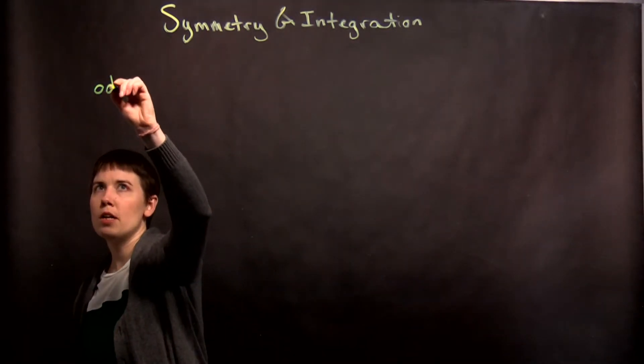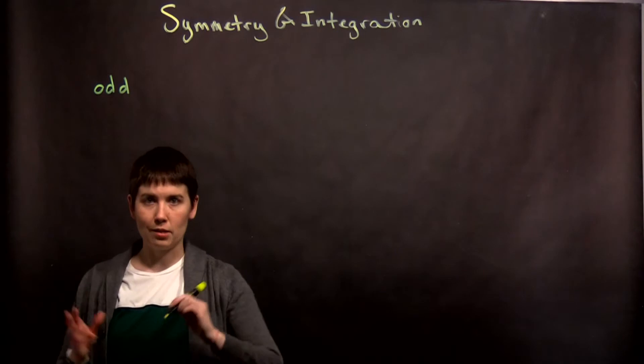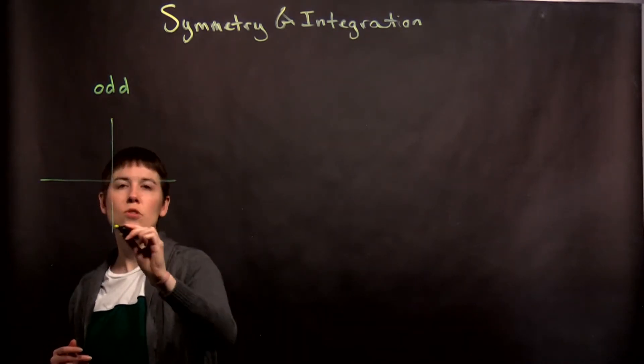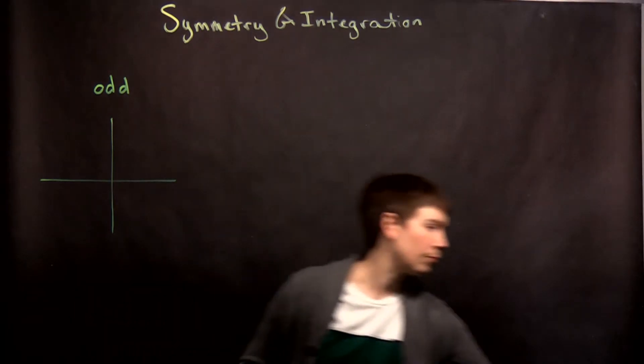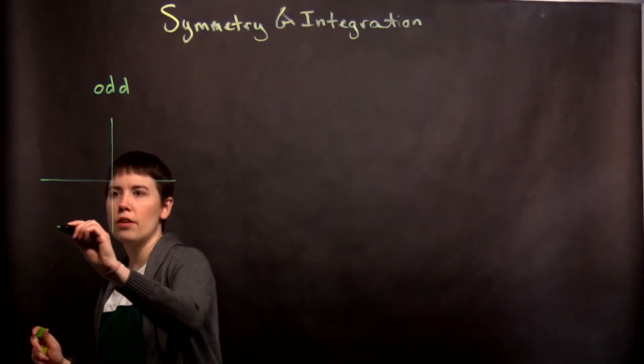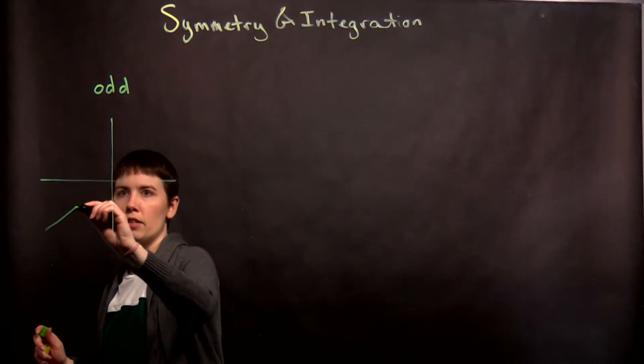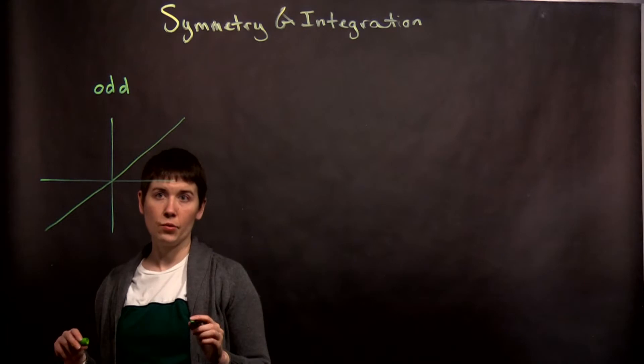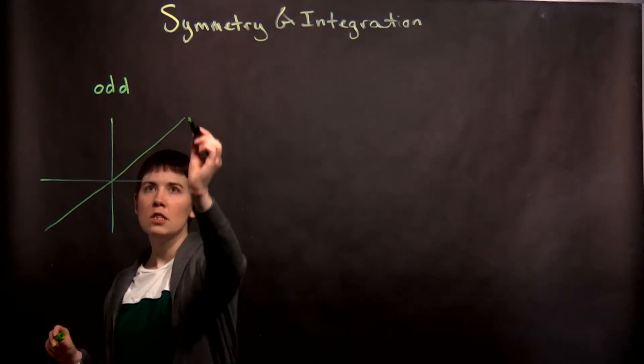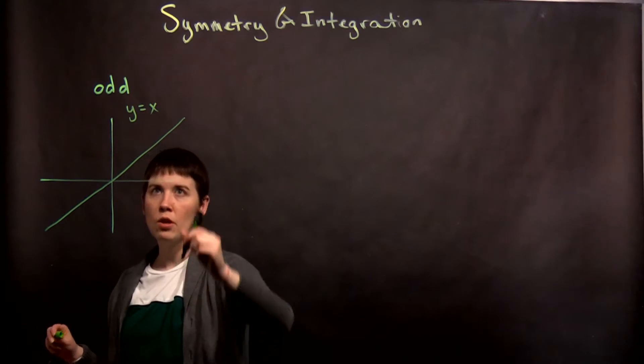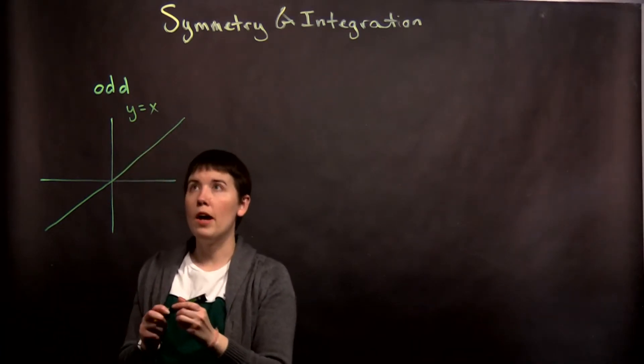So odd symmetry, and I'm not going to necessarily write this in like a technical math way. But if you imagine your axis, and I'll be doing this for a symmetry point around zero, the idea of odd symmetry is what your values are for negative x is negative your values for positive x. Right? So you can see here an example of this is just y equals x, that for negative values of x you get the negative values for y.